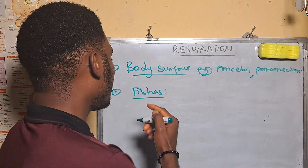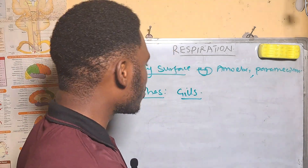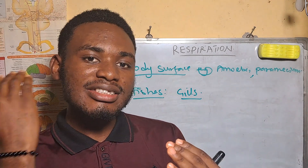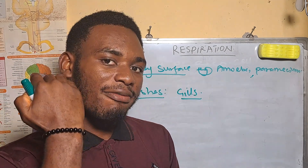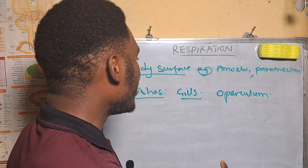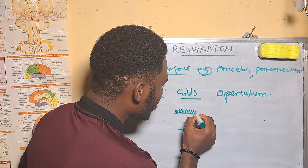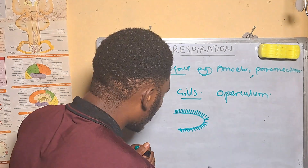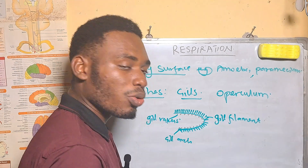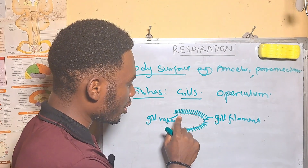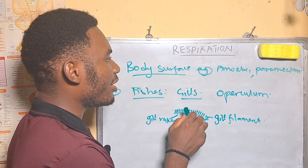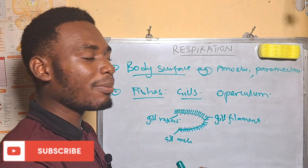For fishes, the organ they use to respire is the gills. These gills are specialized respiratory organs found in fishes — four on each side of the head — and they are covered by an organ called the operculum. Each gill has a row of gill filaments, a gill arc, and gill rakers. A particular gill has a double row of filaments. The arc anchors the gill filaments, while the rakers help in protection and directing food to the mouth.